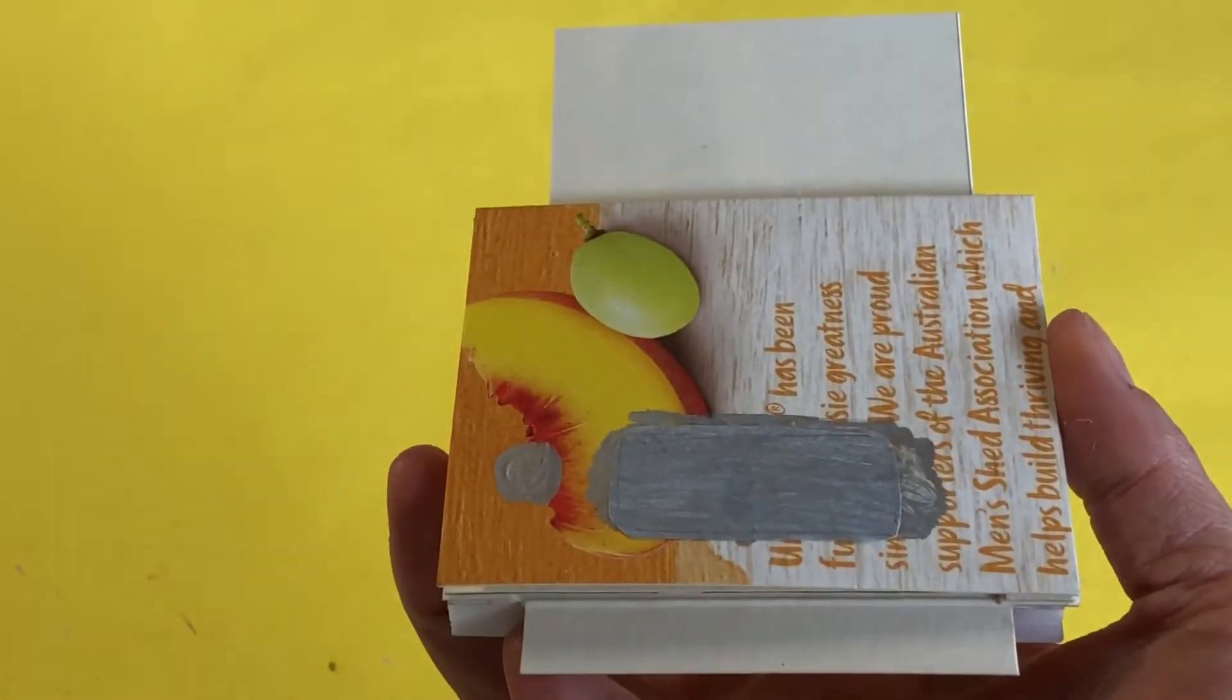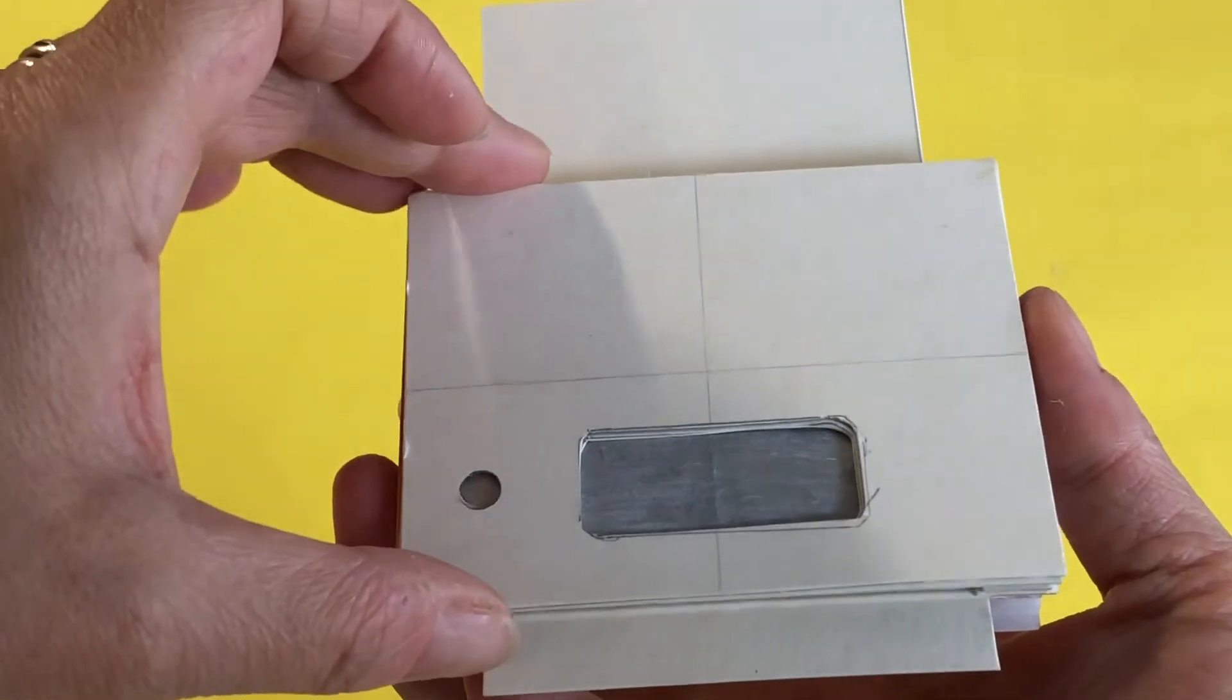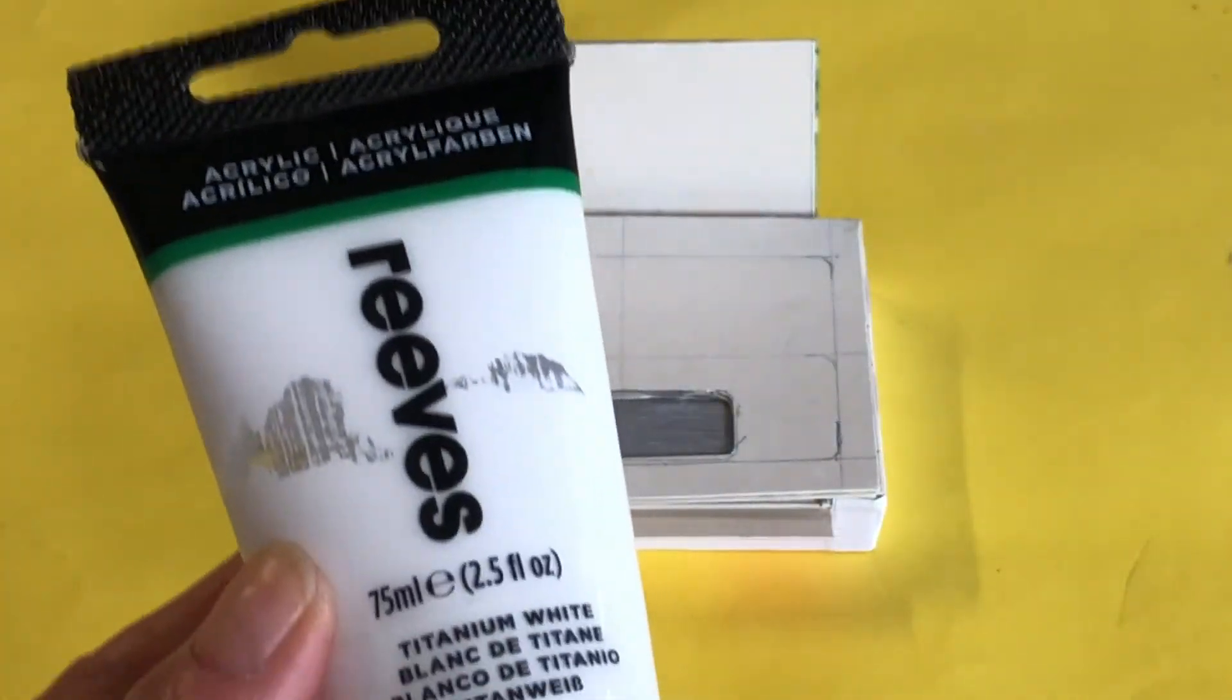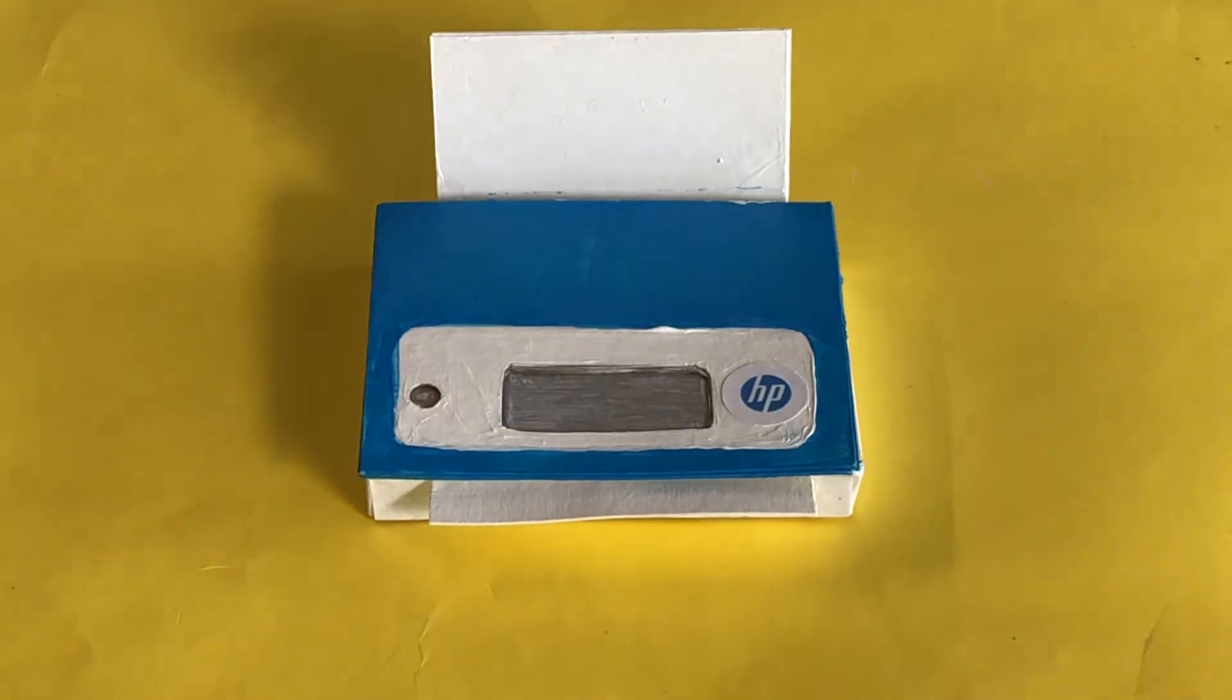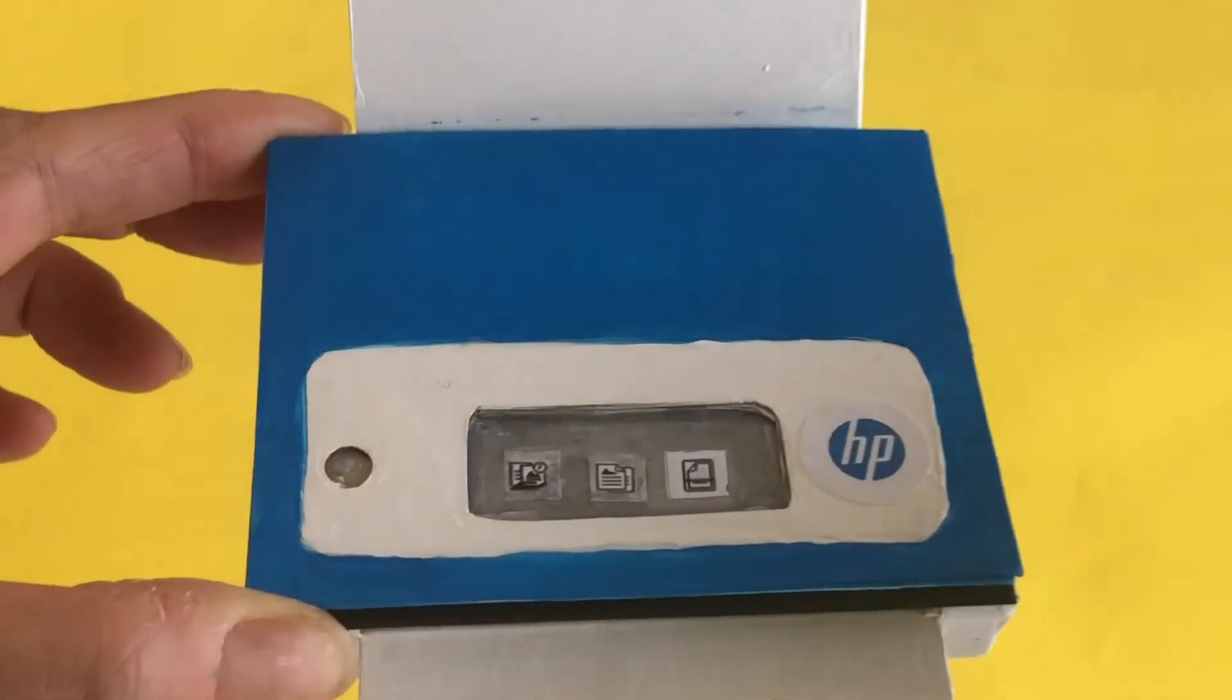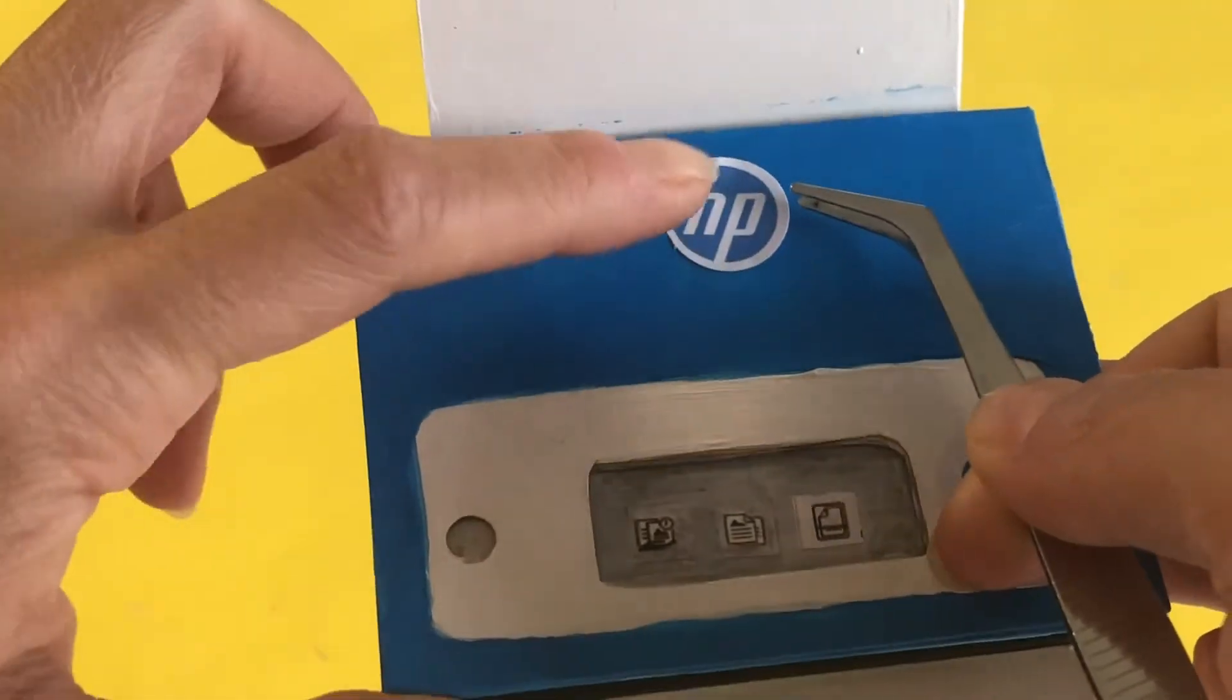For extra touches, we glued an HP logo to the top and tiny scan, copy, and settings images into the open window. We also colored around the images with a silver marker to blend them in with the background.